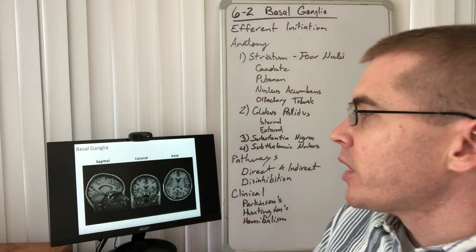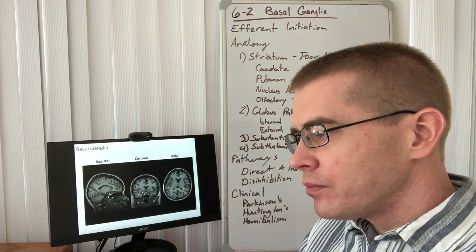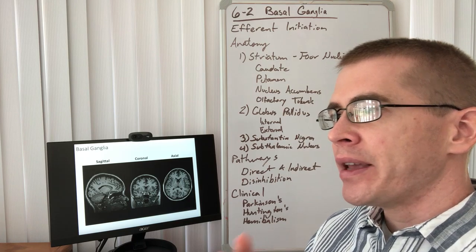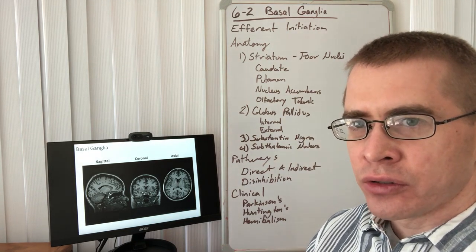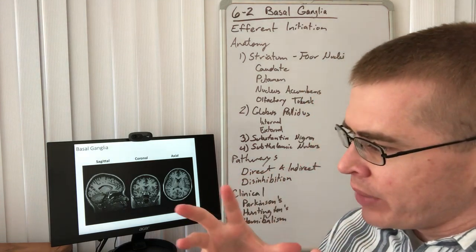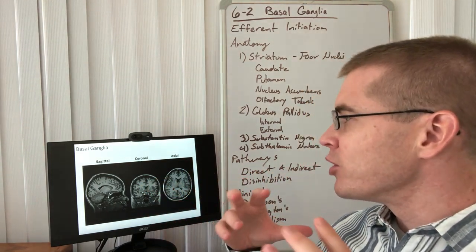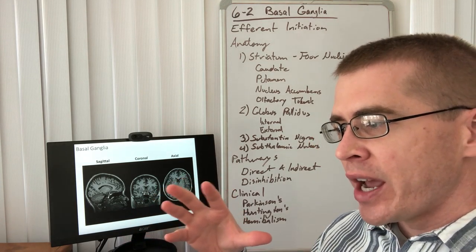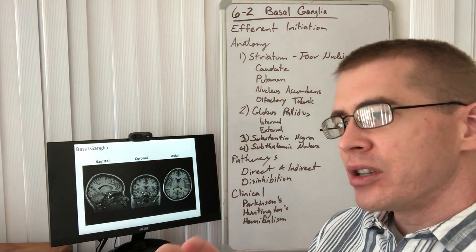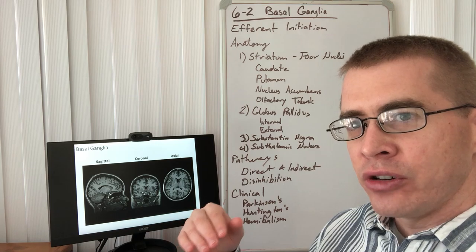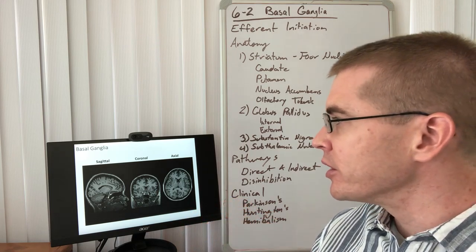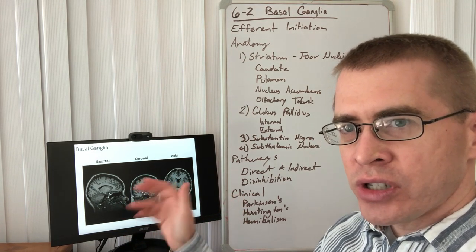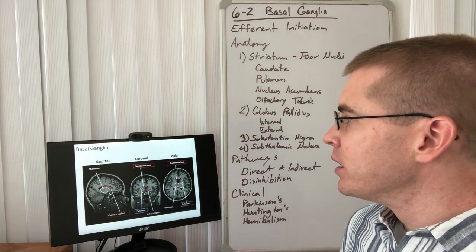The substantia nigra is the most critical component of this basal nuclei circuitry because it is the dopaminergic center of the central nervous system. Basically, all of the dopamine produced in the brain is produced in the midbrain within the substantia nigra and a closely related nucleus, the VTA — ventral tegmental area. These areas are too small to see on imaging, but the other portions of the basal ganglia can be seen with imaging.